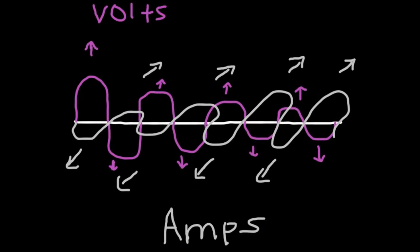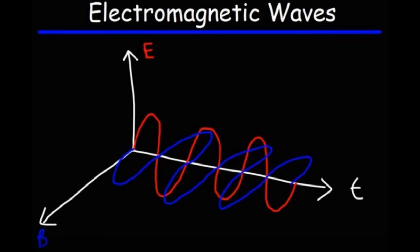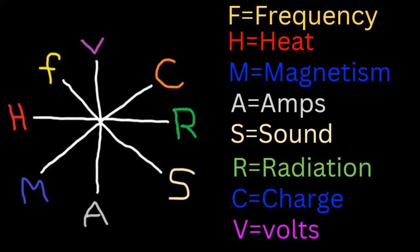So, why do I like defining it this way much more than defining it this way? It really comes down to how you see voltage and how it's created. All of the elements that go into it to create the voltage. We know there's frequency, heat, magnetism, amps, sound, radiation, charges, and volts. But just knowing that they're present is not enough.